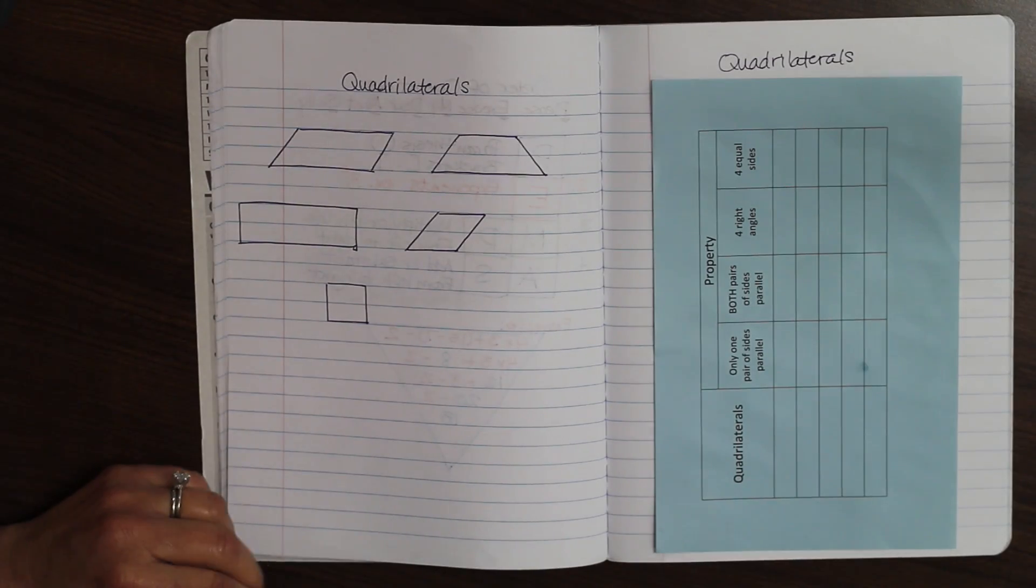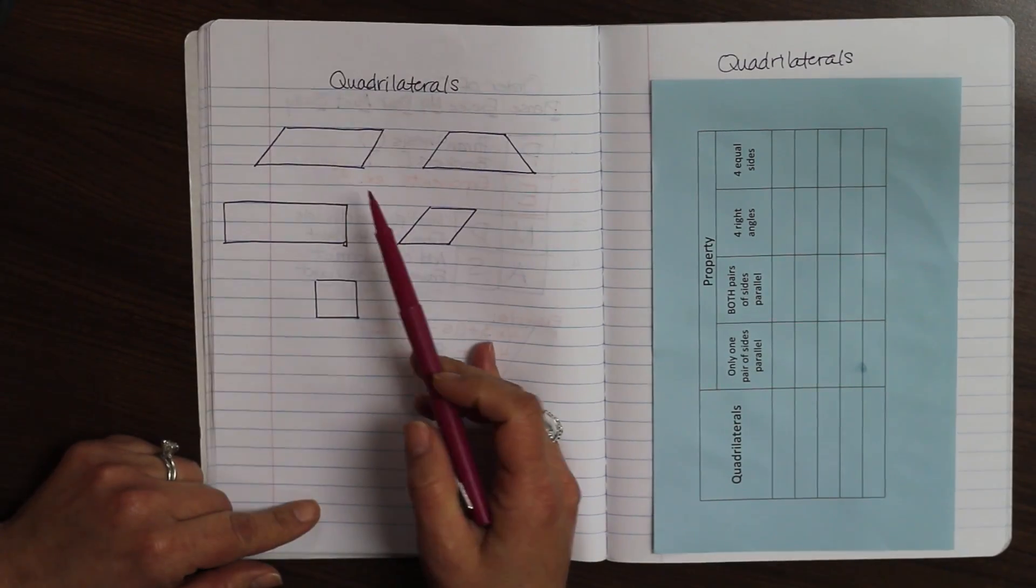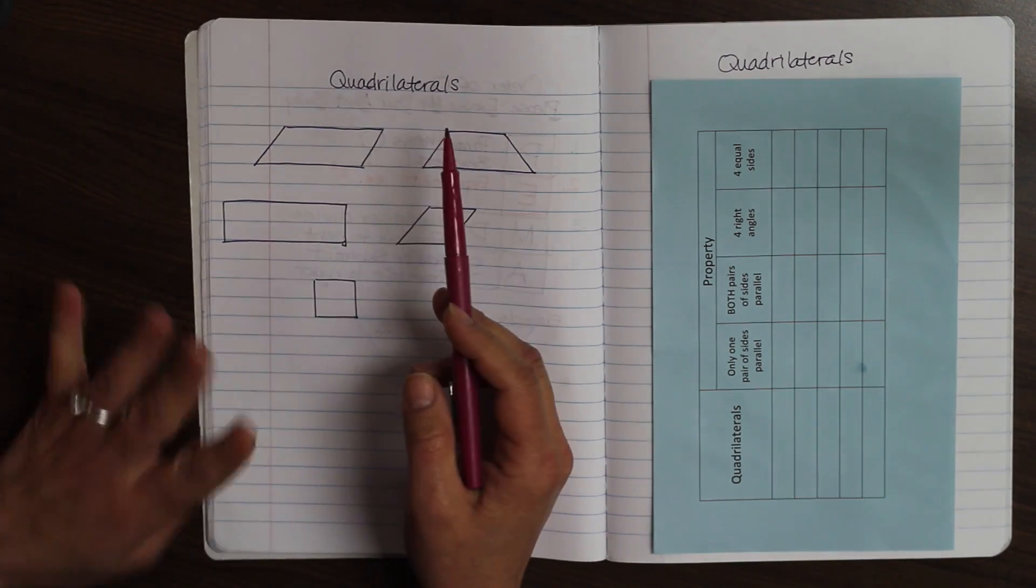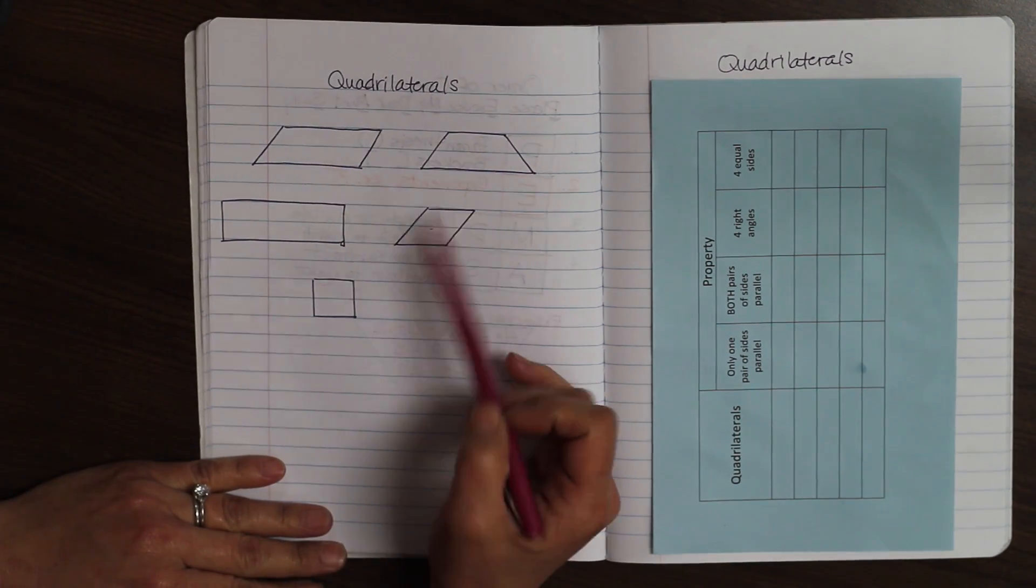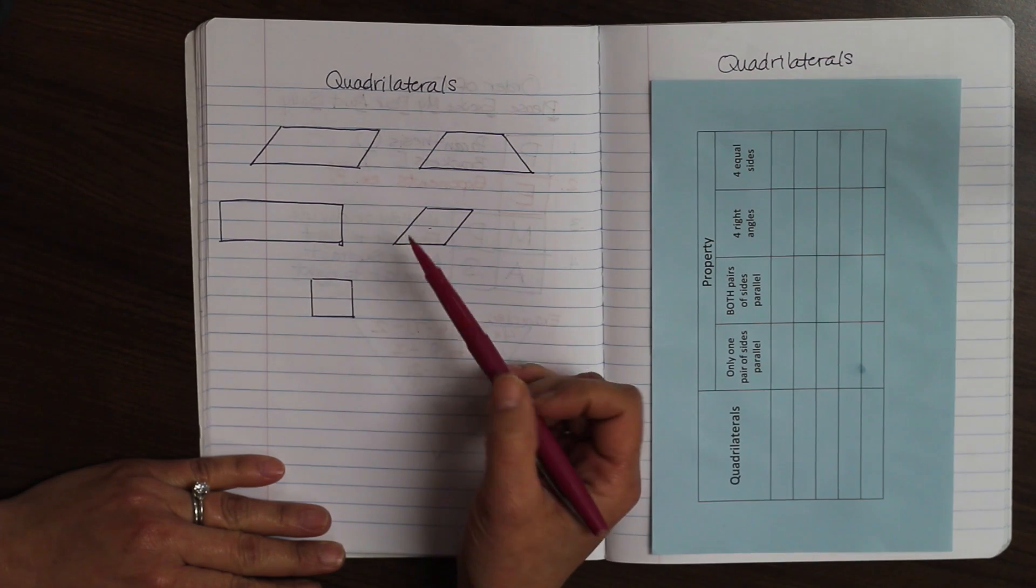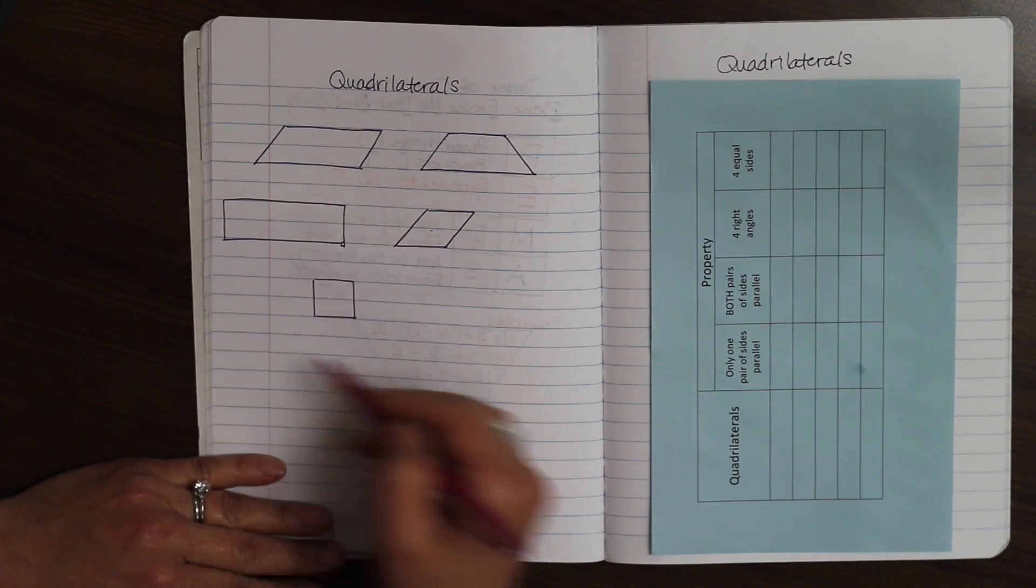Today we're going to talk about quadrilaterals. As you see, quadrilaterals, the quad meaning four, I have five different shapes here. Each of them has a specific name and each of them are quadrilaterals.